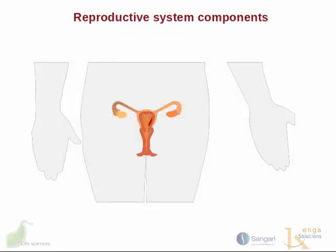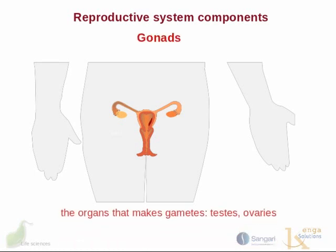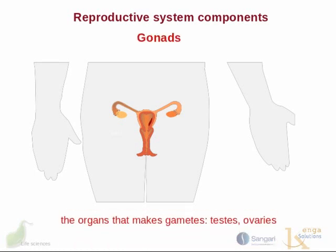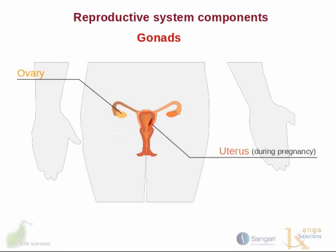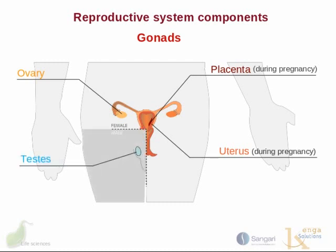The reproductive system components are also important within the endocrine system. Gonads are the organs that make gametes. In males, there are the testes, and in females, there are the ovaries. The ovaries play a prominent role in the endocrine system, as does the uterus during pregnancy, as well as the placenta, also when the woman is pregnant. In males, the testes also serve an endocrine function.